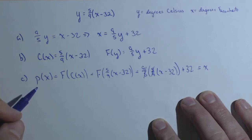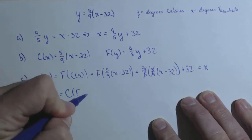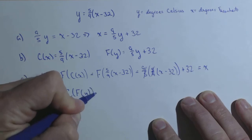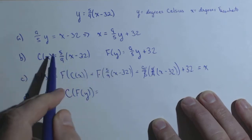So we can do this in the opposite order and see what happens. Maybe we call it r of y, which will be c of f of y.